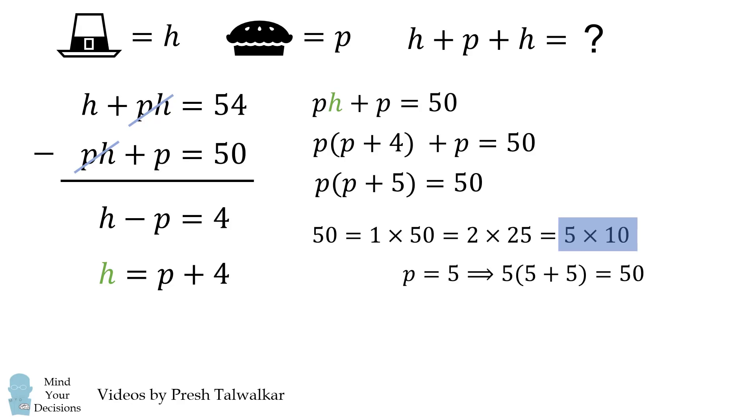So we can say P is equal to 5. And therefore we have 5 times the quantity 5 plus 5 is equal to 50. So we've solved that P is equal to 5. But wait,